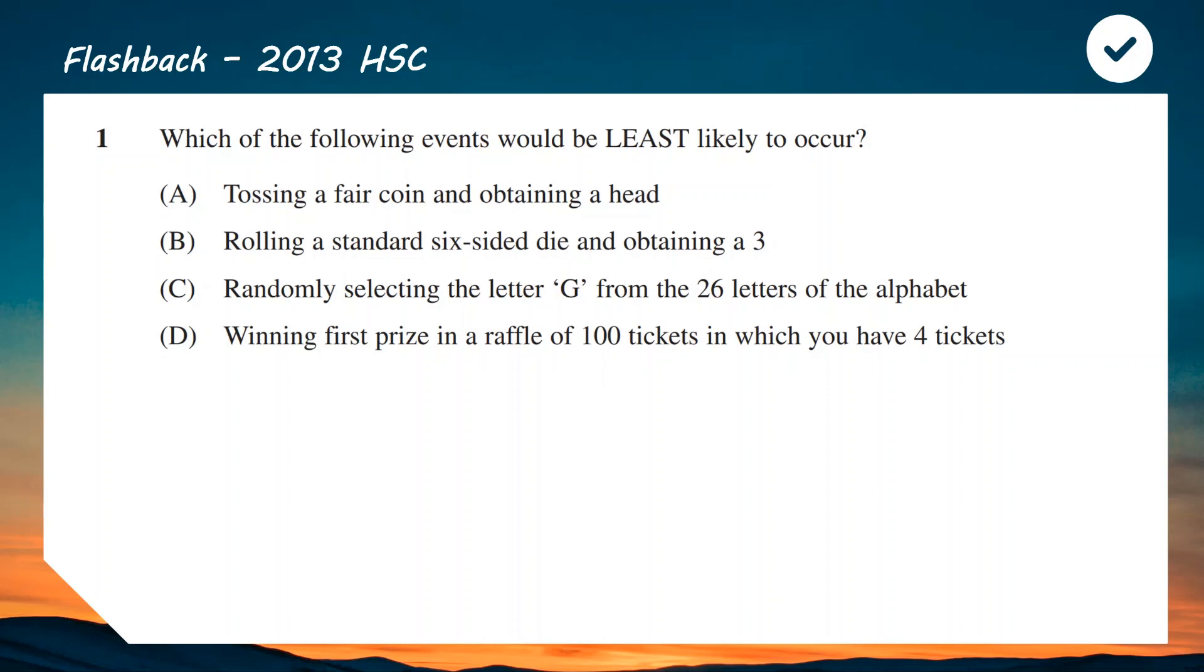If we start with the first one, tossing a fair coin and getting heads, that's a half chance. I'm going to write that as a decimal, 0.5. Next one, rolling a standard six-sided die and obtaining a three. That is one of the six faces, so your probability would be one out of six, which is 0.16666 repeat. For the next one, selecting G from the alphabet, G is one of the 26 letters, so the probability is one out of 26, which as a decimal looks like 0.038.